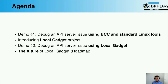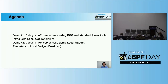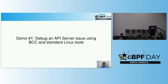The first demo will be to debug an API server issue using BCC and standard Linux tools. I will show what are the main difficulties of using those tools in a containerized environment. Then it will help me introduce the local gadget project and run the same demo again, but this time using local gadget. To finalize, I'd like to share the roadmap and our plan for the local gadget project. Okay, let's start with the demo.